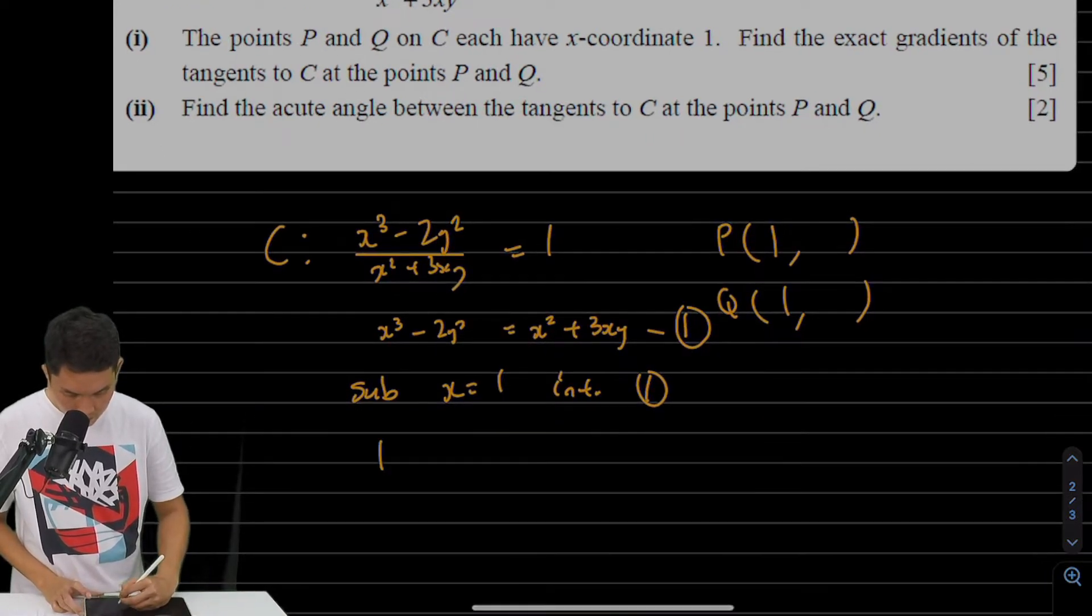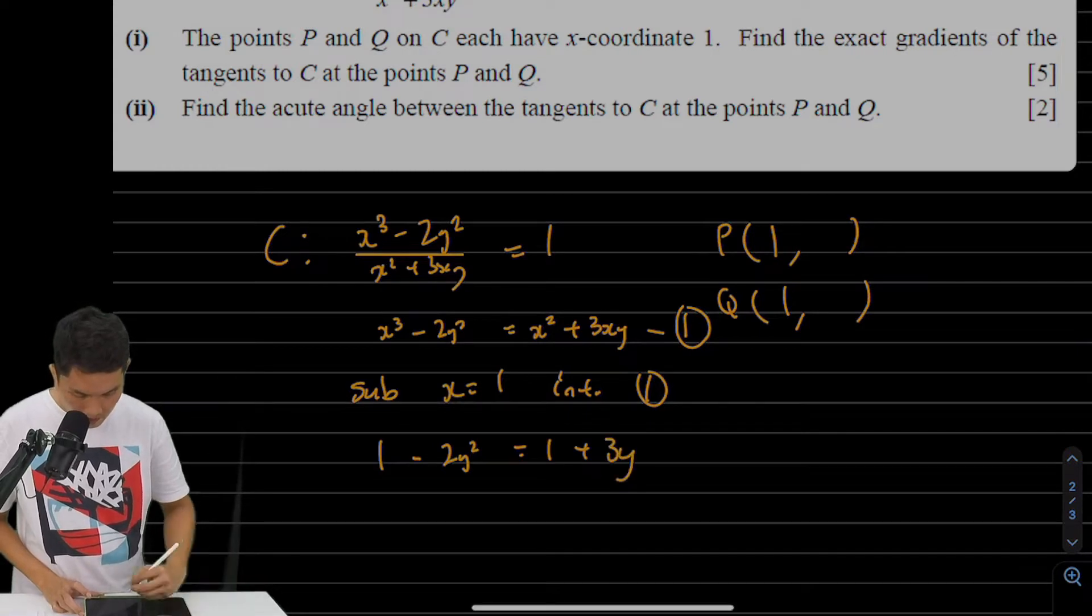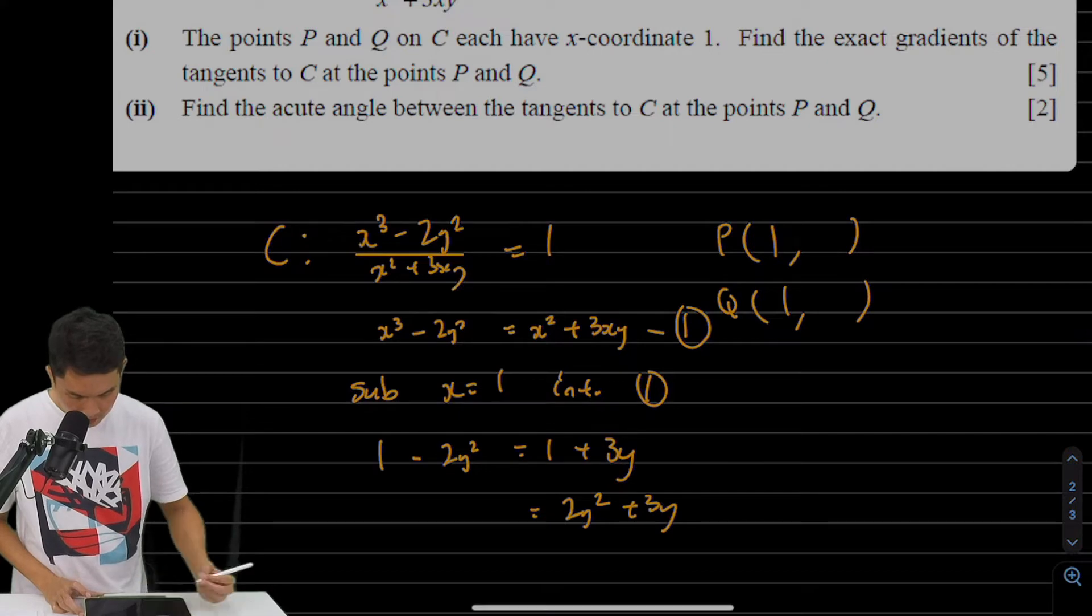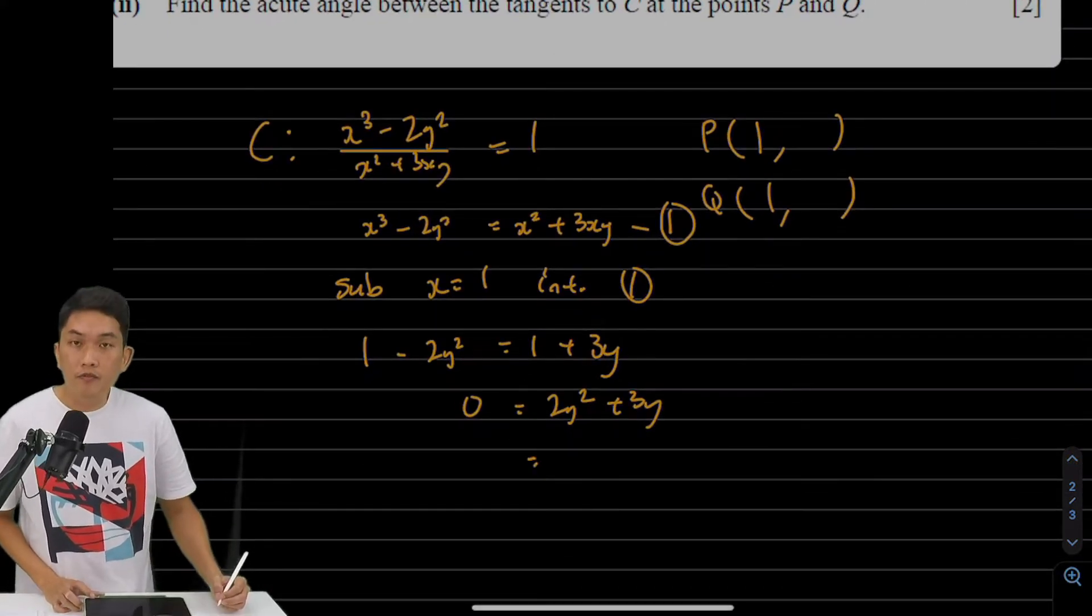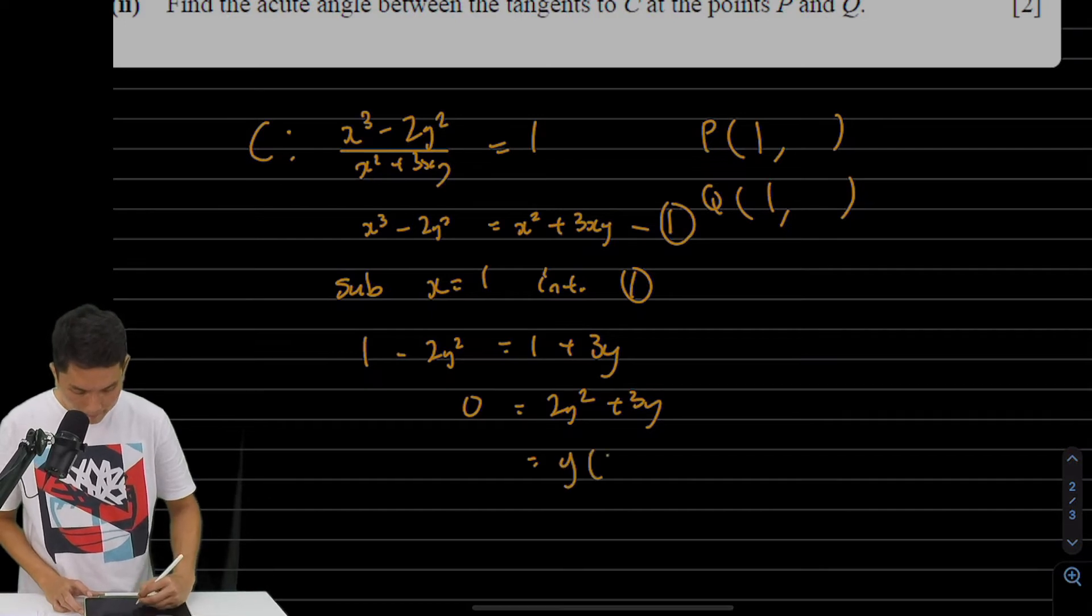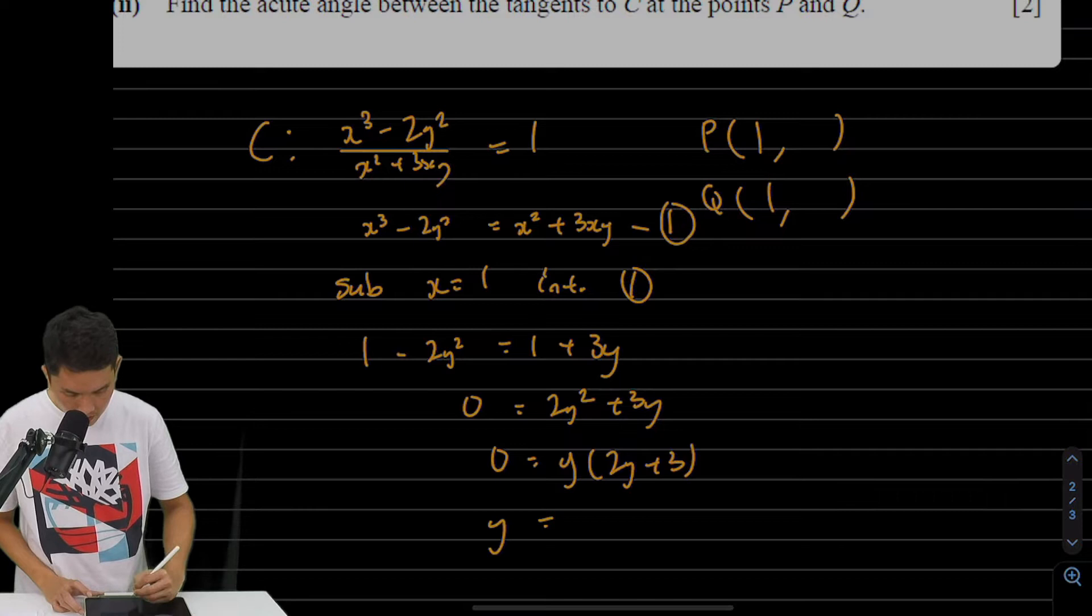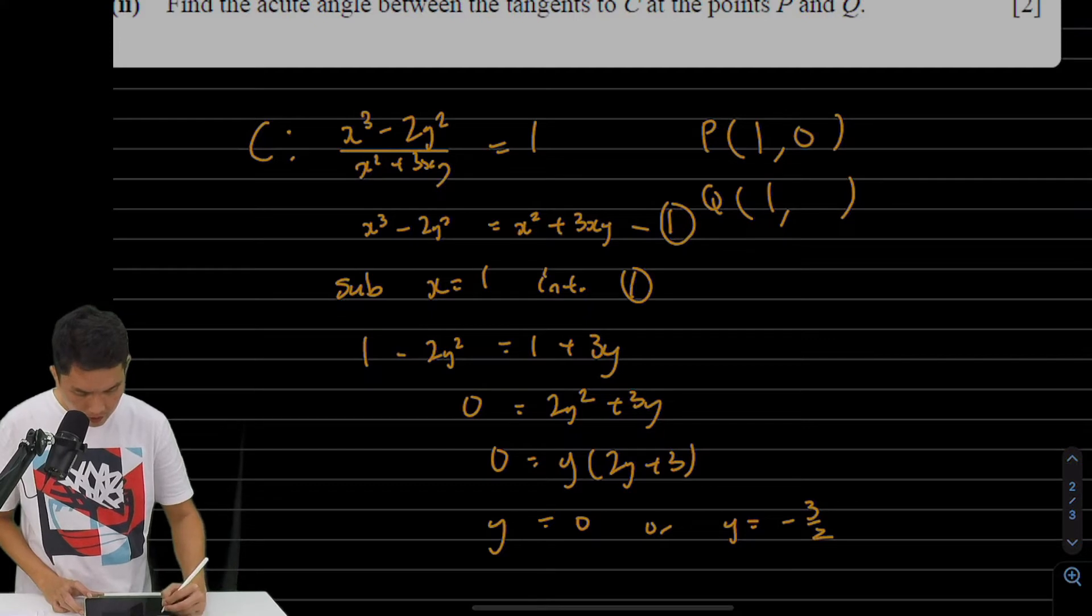We get 1³ - 2y² = 1² + 3(1)y, which gives us 3y. This becomes a quadratic in y that's rather easy to solve. We just factor out y, giving us y = 0 or y = -3/2. So we have these two points.